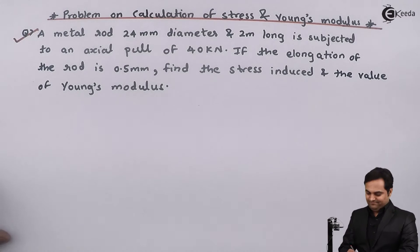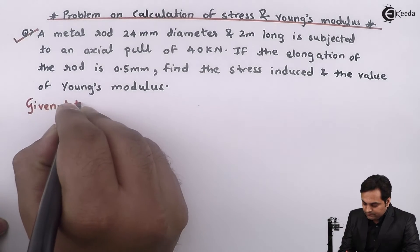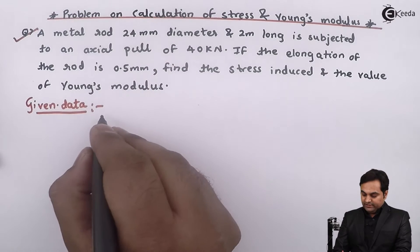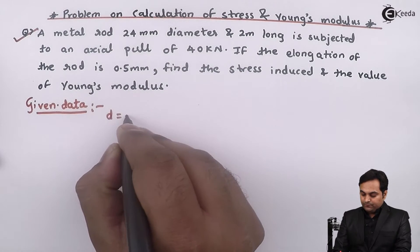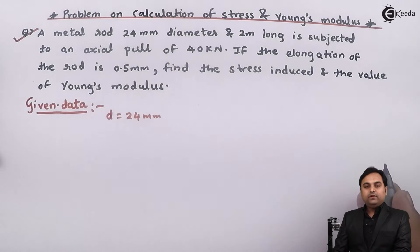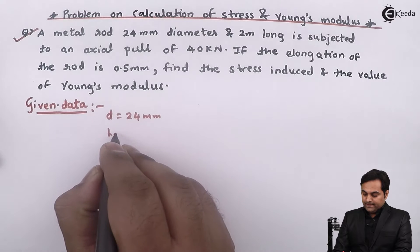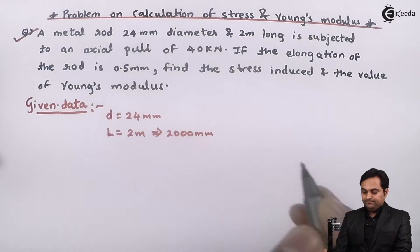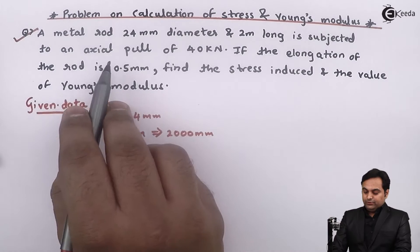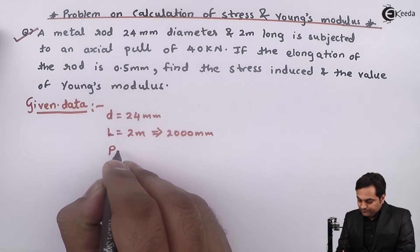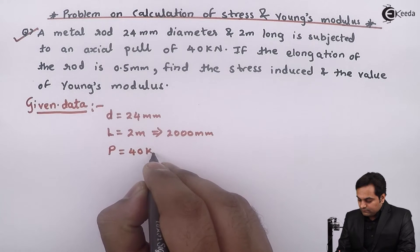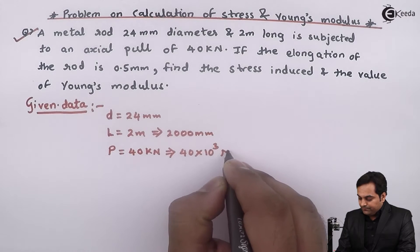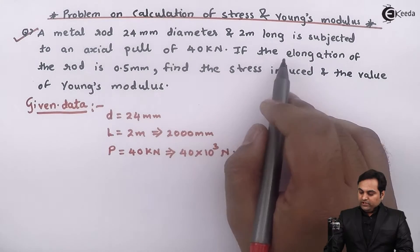Let me write down the given data. Diameter d is equal to 24 mm. Length is given as 2 meters, which we convert to 2000 mm. The rod is subjected to an axial pull of 40 kilo Newton, and converting load into Newton by multiplying by 1000 gives 40 into 10 raised to 3 Newton.